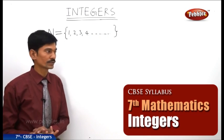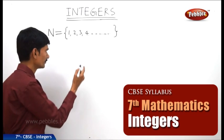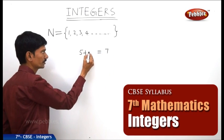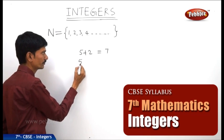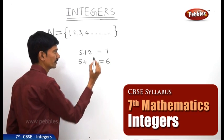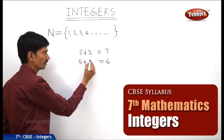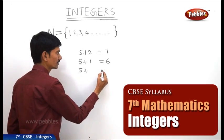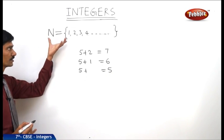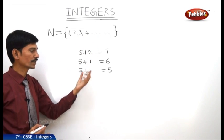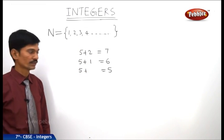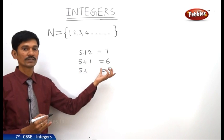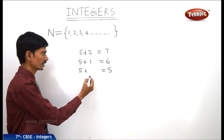Are these numbers sufficient in our day to day life? For example, what should be added to 5 to get 7? Obviously, we know that 2. And what should be added to 5 to get the sum 6? We know that 1 should be added to 5 to get the sum 6. And what should be added to 5 to get the sum 5 again? Is there any number in the set of natural numbers to fill the blank? We cannot find any such number — nothing should be added to 5 to get the sum 5.